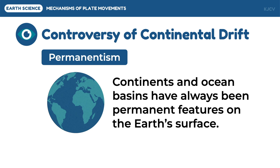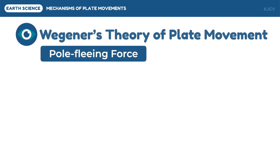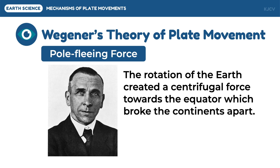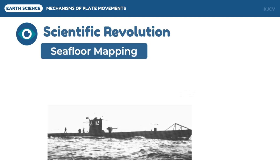What Wegener used as an explanation was the pole-fleeing force. He believed that Pangea originated near the south pole and that the centrifugal force of the planet caused the proto-continent to break apart, with the resulting continents drifting towards the equator. This idea was quickly rejected by the scientific community because the actual forces generated by the rotation of the earth were calculated to be insufficient to move continents. Wegener died in 1930 without having an accepted driving force for his theory.